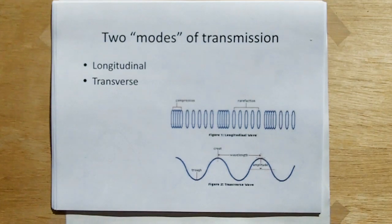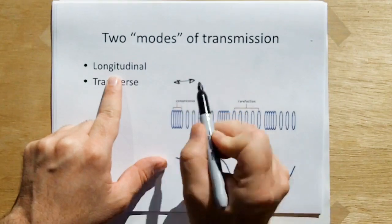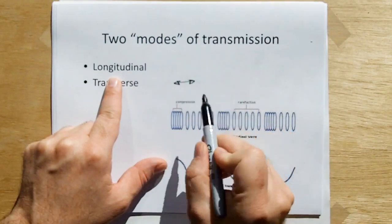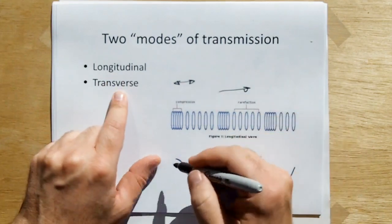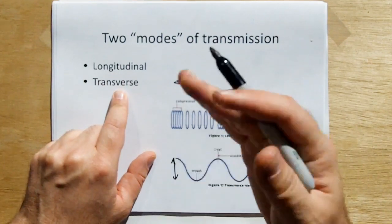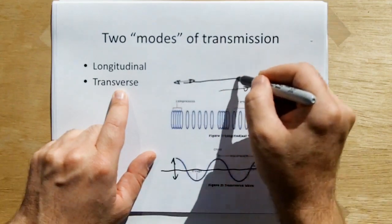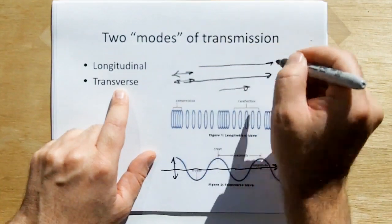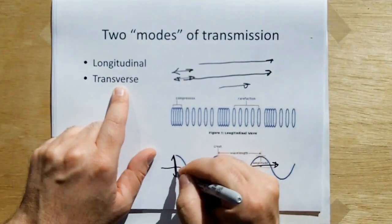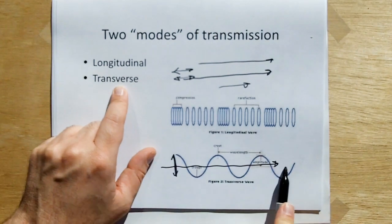Longitudinal and transverse. What this means is, longitudinal means that the main vibration, the primary motion that we see vibrating, moves in the same direction as the wave propagates. And the other one is transverse, where the motion of the medium, the main vibration of the medium is transverse to the direction of propagation. Longitudinal means that the vibration is in line with the direction of travel. Transverse means that the vibration is perpendicular, or transverse, to the direction of propagation.